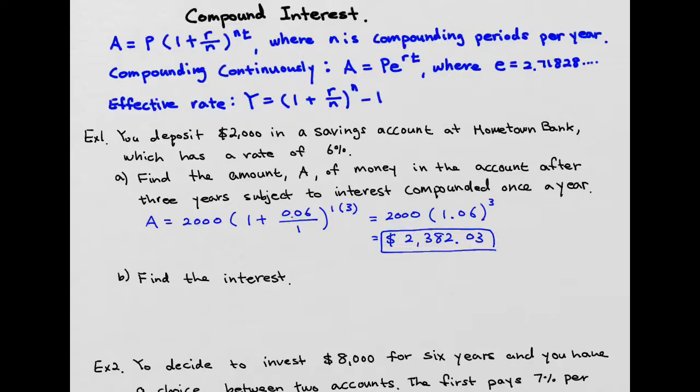This is the total amount. The next example is asking what about just interest itself? In order to find interest itself, we need to subtract the principal, which will give you $382.03. That's just interest itself.